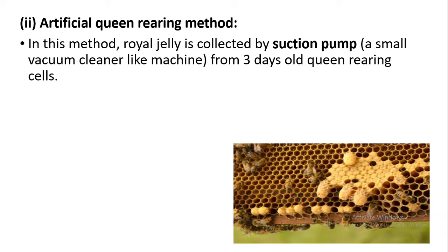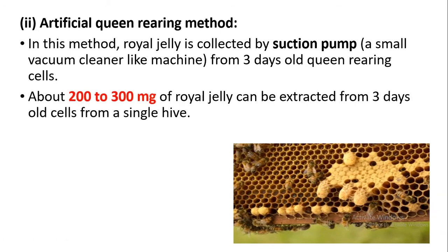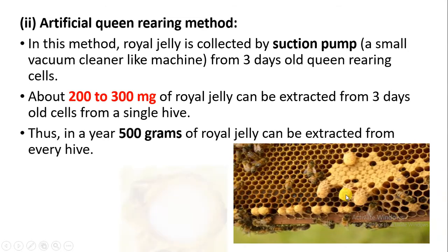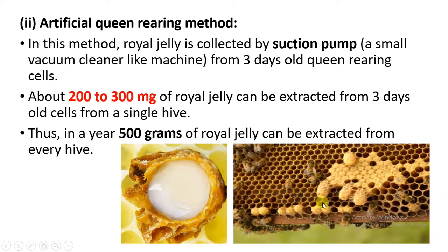The next method is the artificial queen rearing method. Here we are able to collect the royal jelly with the help of a suction pump — a very small vacuum cleaner-shaped machine. The suction pump is put into the queen rearing cells, and from three-day-old queen cells we are able to extract about 200 to 300 mg of royal jelly from a single hive. This way we can extract the royal jelly without breaking the cells.